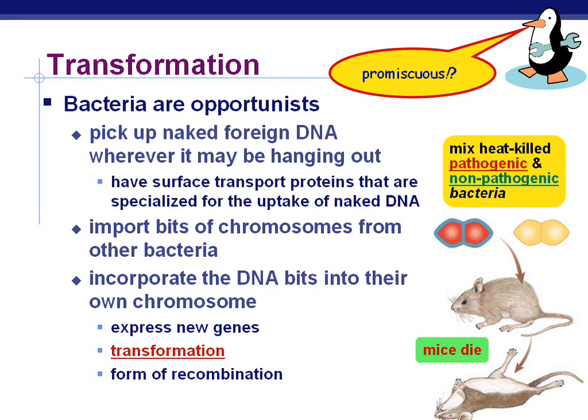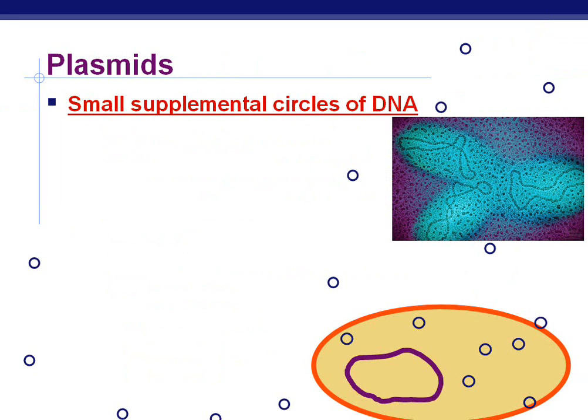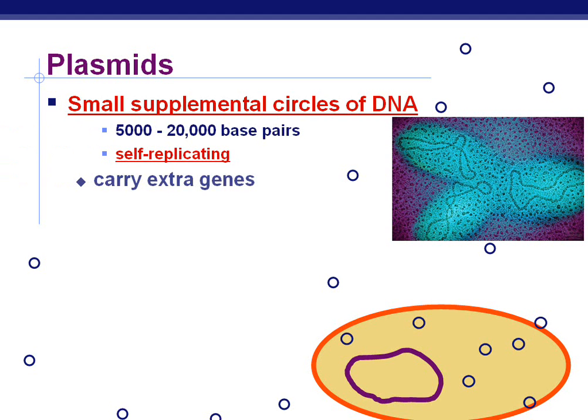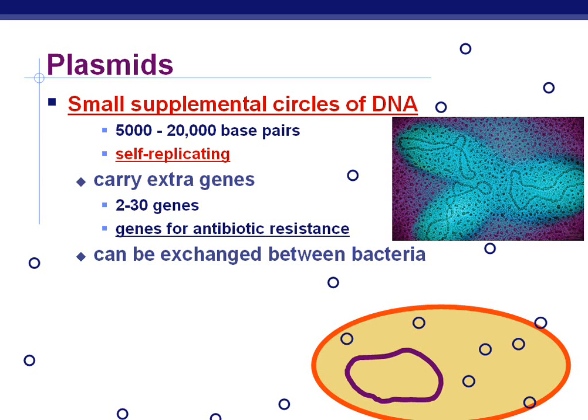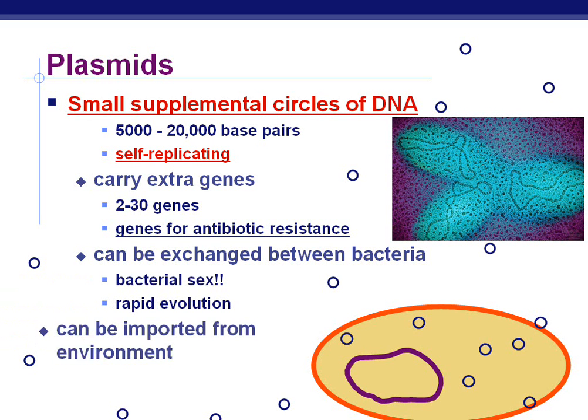These little bits of DNA that are floating around are called plasmids. They're super small, supplemental circles of DNA — kind of like tiny chromosomes. They are between 5,000 and 20,000 base pairs and are self-replicating. They carry extra genes, between 2 and 30, and often these genes are for antibiotic resistance. They can be exchanged between bacteria — kind of like bacterial sex — which allows for rapid evolution. This is one way for bacteria to get new genetic variation without true sexual reproduction.